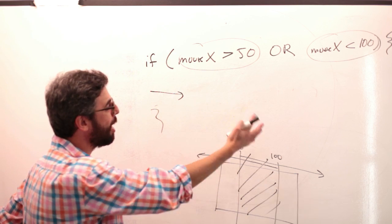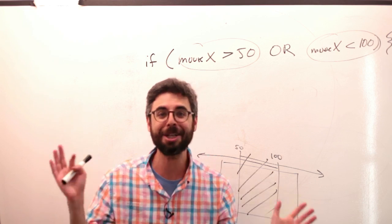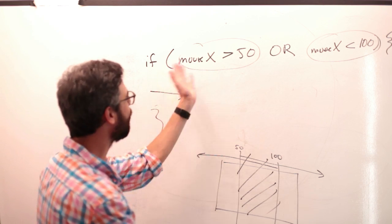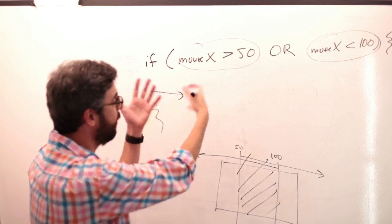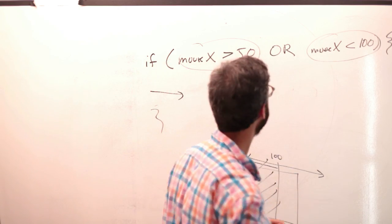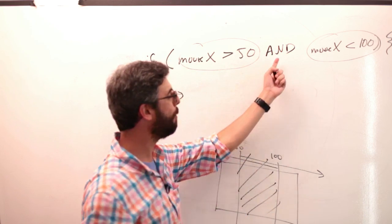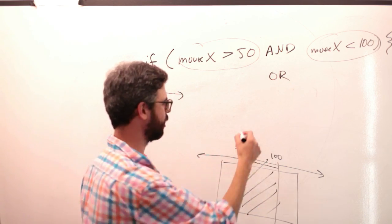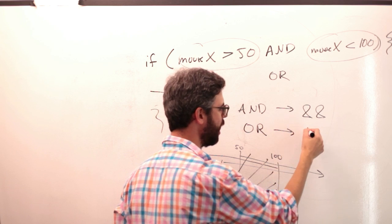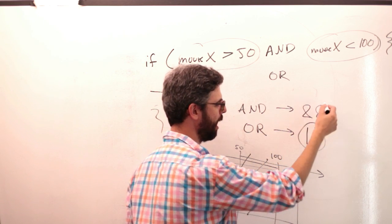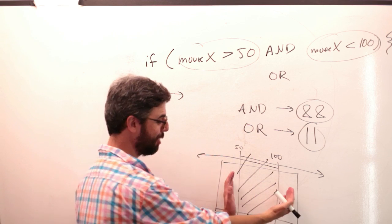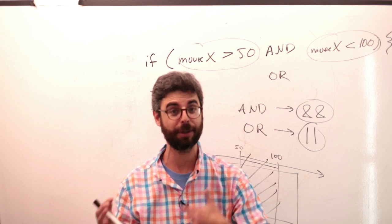The actual syntax: AND is written as two ampersands (&&), and OR is written as two pipes (||). So I'm going to make two quick examples — I'll add an AND to our mouseX example, and an OR to our bouncing ball example.